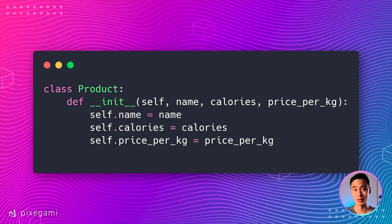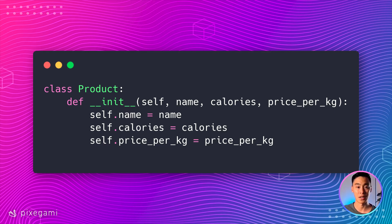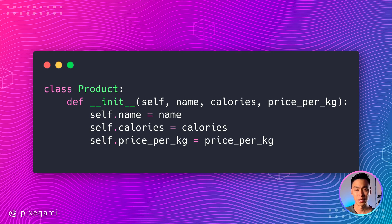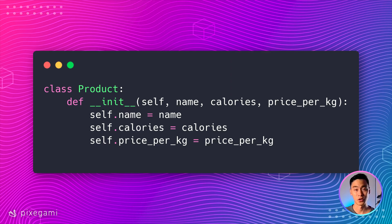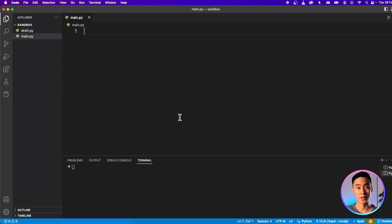Let's take a quick look at an example. Suppose I'm building a food database for a supermarket and I want to have information about each food product that I want to sell. This is what a class would look like for that. So here you have a class named Product and there's a function called init with two underscores, which stands for initialize, and then variables: name, calories, and price per kg. This class is a blueprint for a food product — it's not referring to any particular product, just a way to specify what all products should have. Now let's hop over to our editor and type that out.